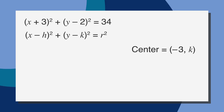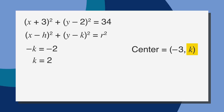k represents the y coordinate of the center of the circle. In this case, y minus k is y minus two. If negative k equals negative two, then k equals two, so the center of our circle has a y coordinate of two. Now we know the center of the circle is at point (negative three, two). We used the equation to find the center of the circle, but we're not done.